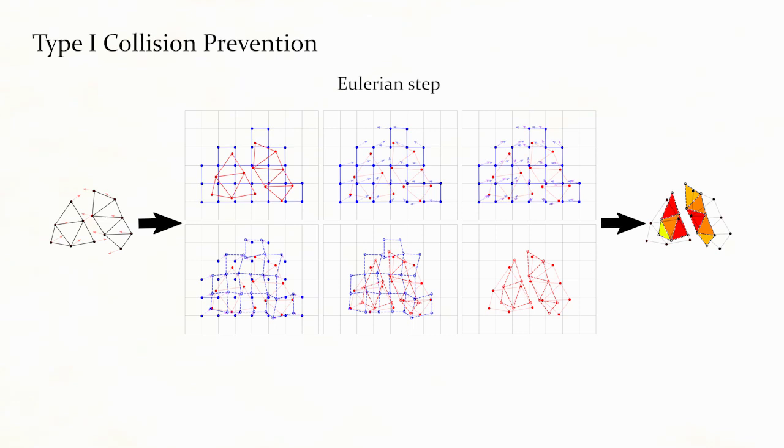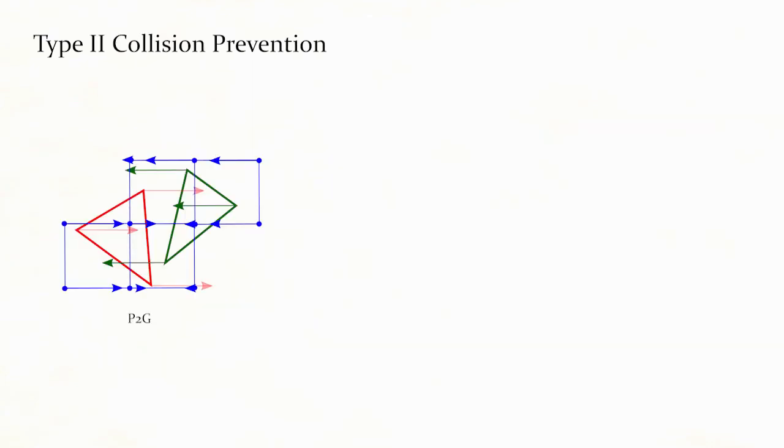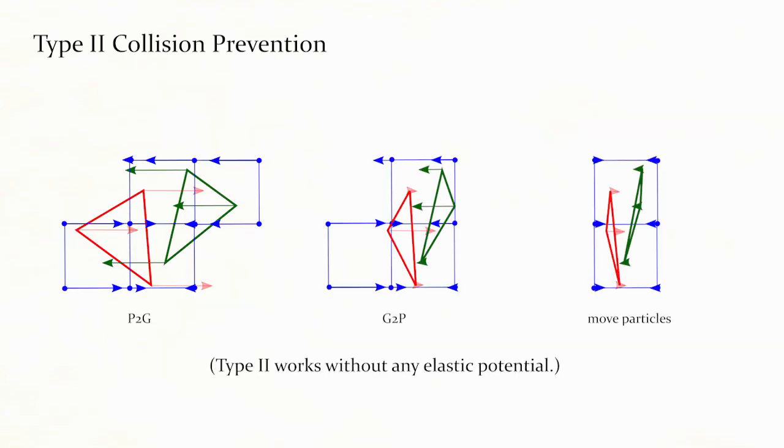Type 1 collisions are penalized via the potential energy on the grid during the momentum update. Type 2 collisions are resolved by the smoothing properties of transferring to and from the grid. The type 2 collision is independent from the elastic potential used in type 1.